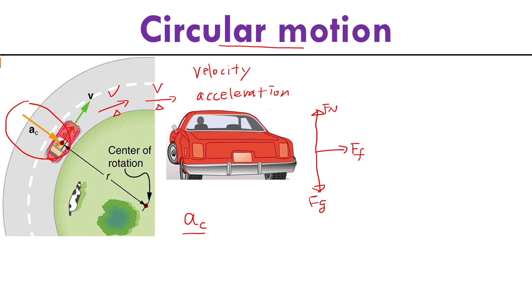We call that acceleration centripetal acceleration. From vector or calculus calculations, we can find that the centripetal acceleration equals v² divided by r, or ω² times r, or ω times v. This is the acceleration when any object is going through uniform circular motion, and this acceleration points to the center.